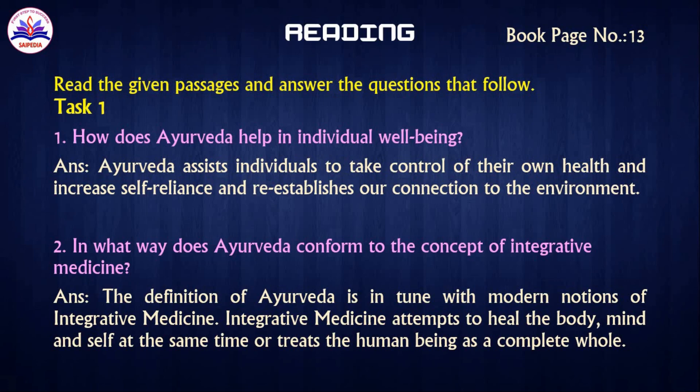Next, we will cover the reading topic. Reading comprehension develops the cognitive ability to understand the functional and inferential information of a given text. The ability to make inferences is to use two or more pieces of information from a text to arrive at a conclusion. Here you have a reading task — read the given passage and answer the questions that follow. The passage is about Ayurveda. Task 1, page 13 — you have 5 questions to answer.